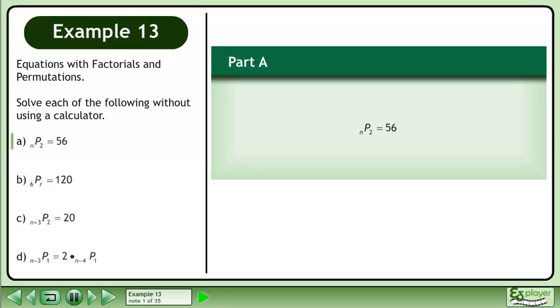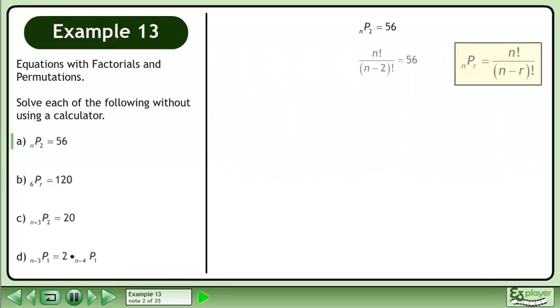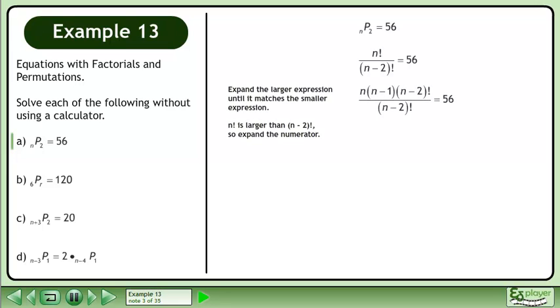In Part A, solve nP2 equals 56. Write the permutation as a fraction. Expand the larger expression until it matches the smaller expression.